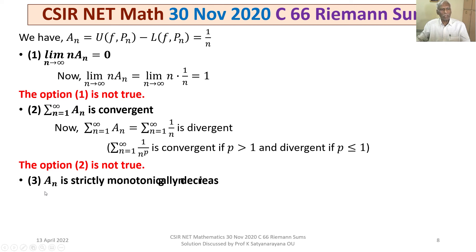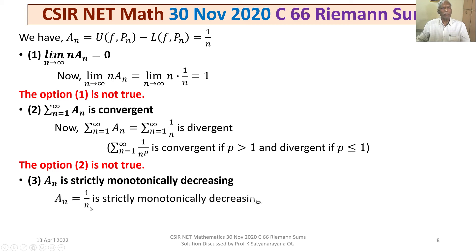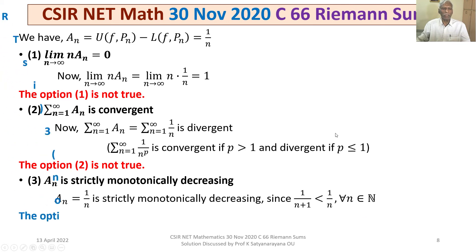For Option 3: An is strictly monotonically decreasing. Since An = 1/n, we have 1/(n+1) < 1/n for all n in the natural numbers, that is An+1 < An for all n. Hence it is a strictly monotonically decreasing sequence, and Option 3 is true.